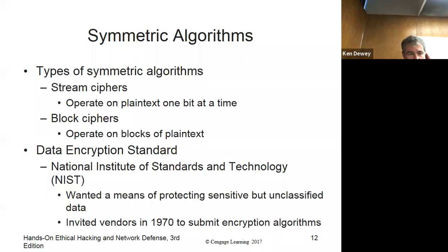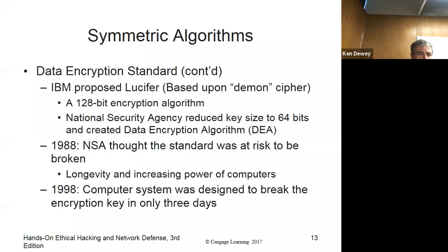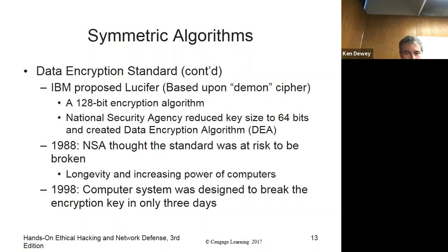DES — Data Encryption Standard — was a NIST standard for quite a while, actually made by IBM. NIST went out and said 'we need an algorithm,' so IBM came up with an algorithm called Lucifer, really based upon the daemon cipher. They called it Lucifer because daemon is what — it's a daemon. The algorithm was originally called 'demonstration,' but they were limited on the length of the name, so they shortened it to 'daemon.' It had a 128-bit key that was shortened to 64-bit.